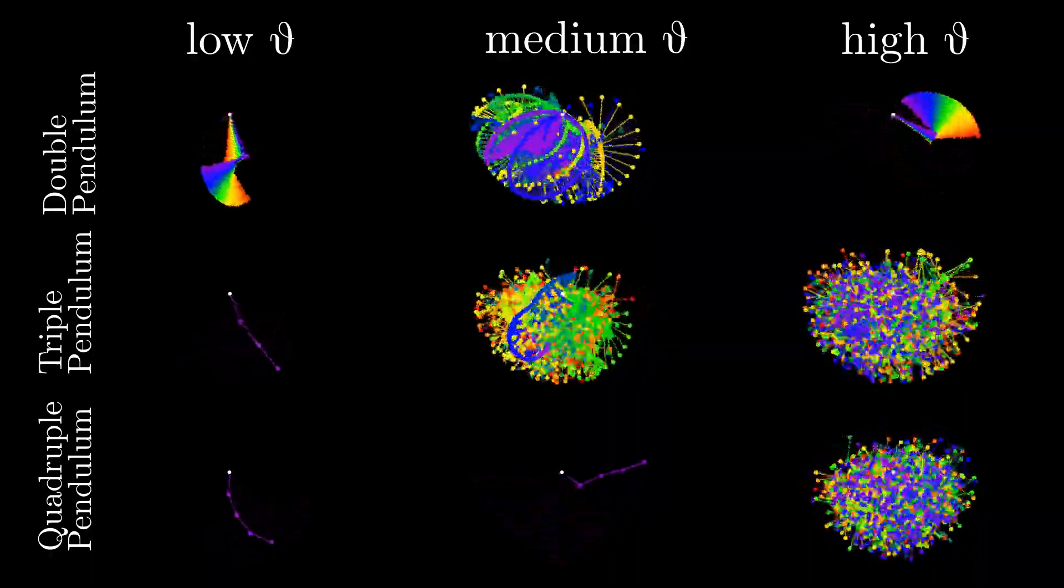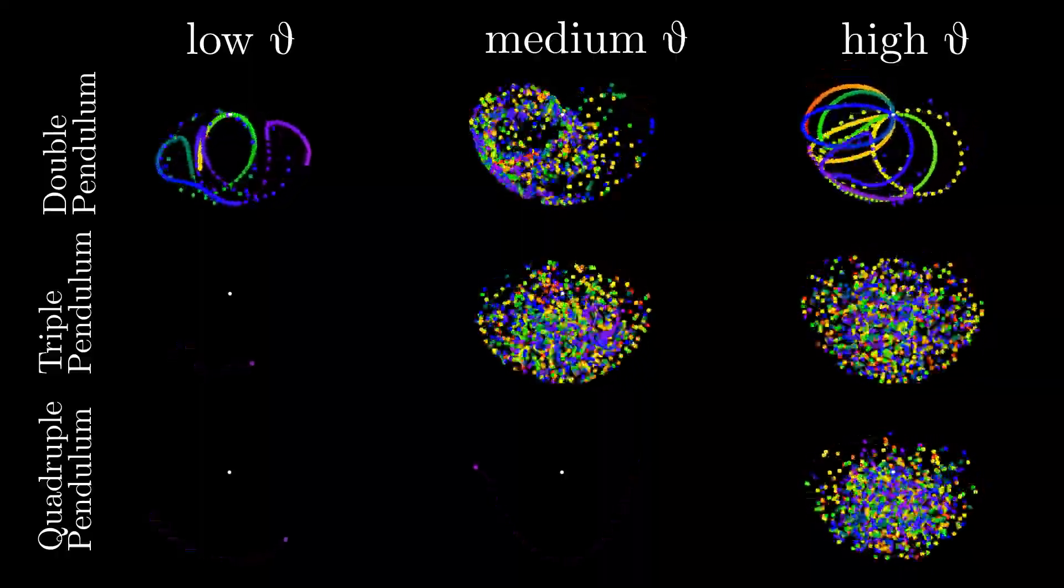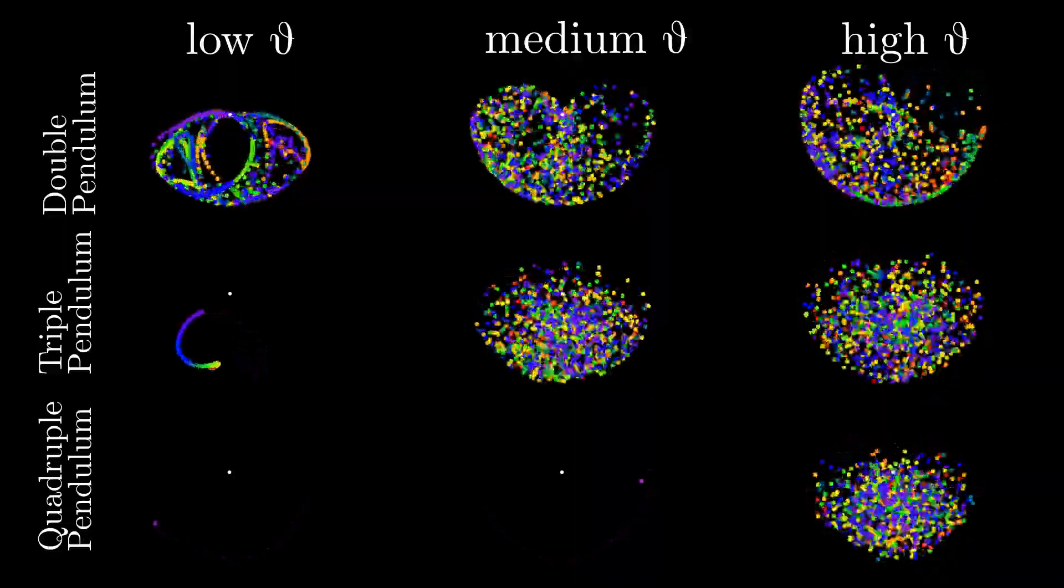Most interestingly, increasing the energy of the system by changing the starting position, sometimes makes the pendulum more and sometimes less chaotic. The effect is ambiguous.